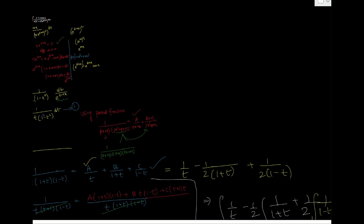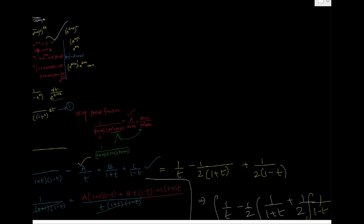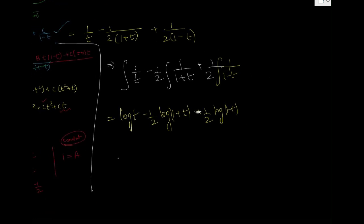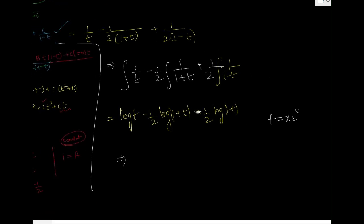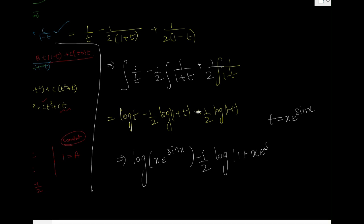Now substituting back t = x·e^(sin x): the final answer is ln|x·e^(sin x)| - (1/2)·ln|1 + x·e^(sin x)| + (1/2)·ln|1 - x·e^(sin x)| + C. You can apply log properties to simplify further depending on the answer choices given.